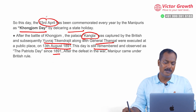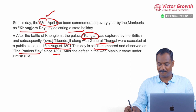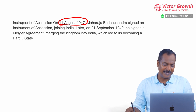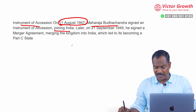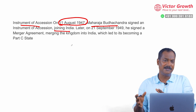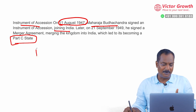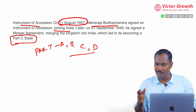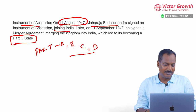Two days are important in Manipur: 23rd April is celebrated as Khongjom Day, and 13th August is celebrated as Patriot Day since 1891. At the time of independence, Manipur was a separate kingdom. On 11th August 1947, they signed the Instrument of Accession and Maharaja Budhachandra signed the agreement joining India. In 1949, there was a merger agreement under which the Manipur Kingdom merged and became a Part C state. Initially at the time of independence, India was divided into Part A, B, C and D states, which were later reorganized as Union Territories.